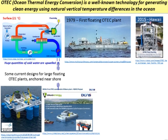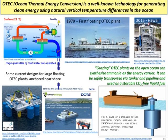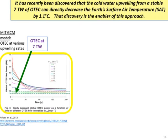Aside from near-shore anchored OTEC plants just generating electricity, others have asked how else OTEC can be used. The concept of grazing OTEC plants has been around for a while: they're not anchored but free-floating in tropical ocean regions where the temperature gradient is large enough. The idea is to use the electrical energy to synthesize ammonia as an energy carrier - considered much safer than trying to generate, transport, and ship hydrogen. Ammonia is a storable, CO2-free liquid fuel.